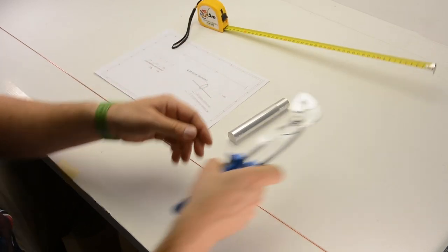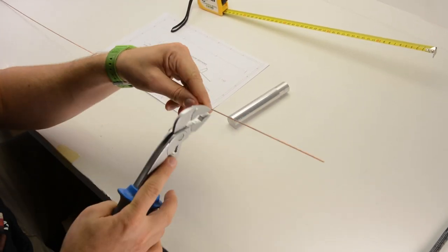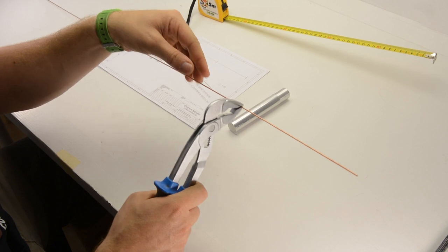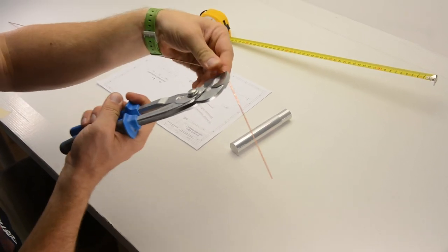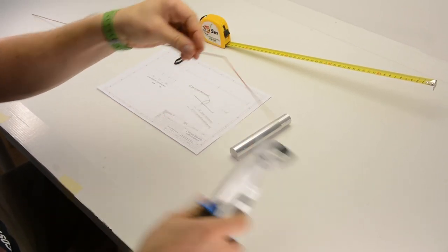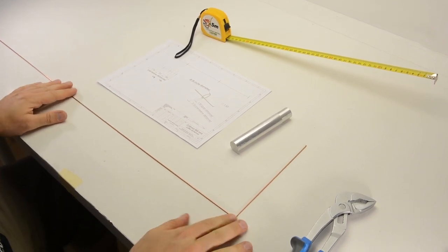At this point we'll use the pliers to do a 90 degree turn in the wire and we simply do a nice 90 degree turn of the sorts.